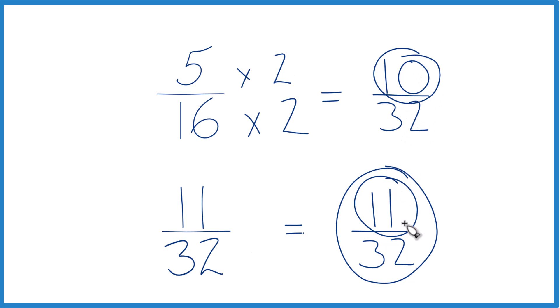So 11 thirty-seconds, that's greater than 10 thirty-seconds. Not a lot, only 1 thirty-second, but it's still larger. And since 10 thirty-seconds and 5 sixteenths are the same, we can say that 11 thirty-seconds is going to be larger than 5 sixteenths.